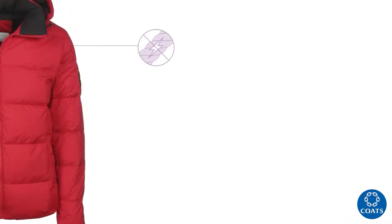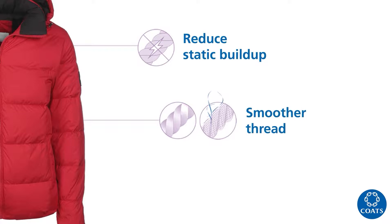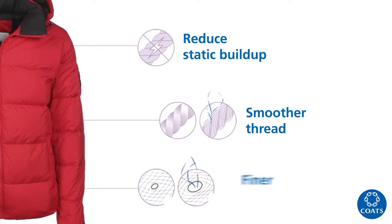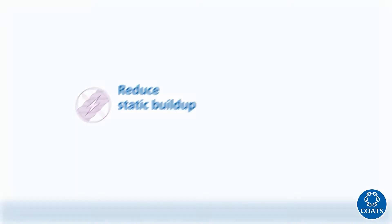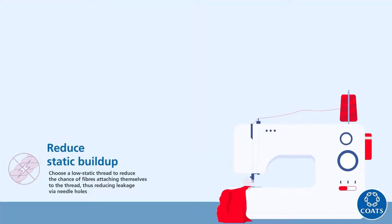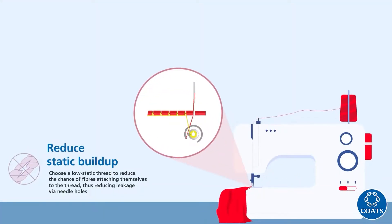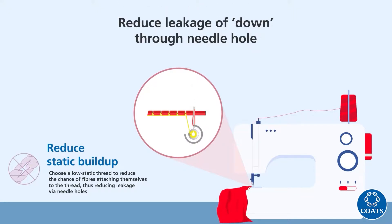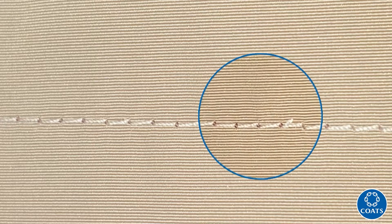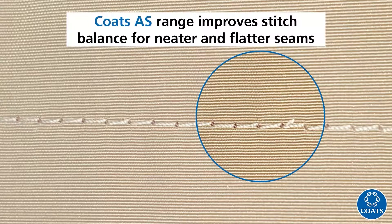Further, to avoid down leakage, it also has a special finish to reduce static buildup in dry factory conditions that cut down garment rejections. Most importantly, excellent static and dynamic friction values reduce leakage of down through the needle hole. In addition, Coates AS threads allow lower tension settings, improving the stitch balance for neater and flatter seams.